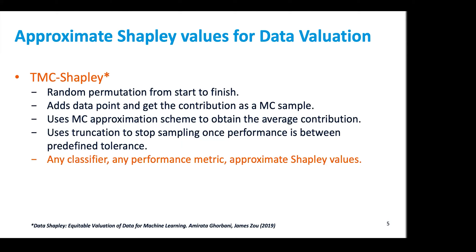To address this limitation, some authors recently proposed an approximate algorithm to get approximate Shapley values for data evaluation, called Truncated Monte Carlo Shapley. They use a random permutation in a Monte Carlo scheme, add a data point to get the contribution as a Monte Carlo sample, use Monte Carlo approximation to obtain the average contribution, and use truncation to stop sampling once performance is within a predefined tolerance. This approach allows using any classifier and any performance metric, though they are approximate Shapley values.